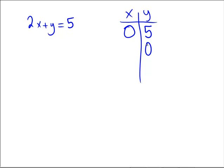Let y equals zero, ignore or cover the y part, and you get two x equals five. So that must mean that x equals five halves.